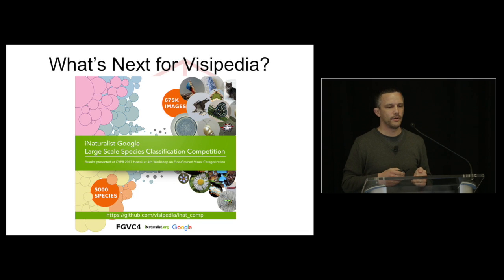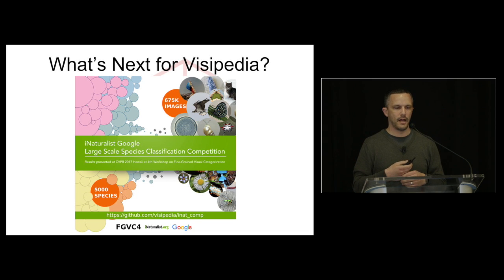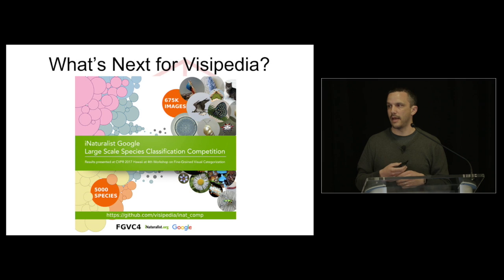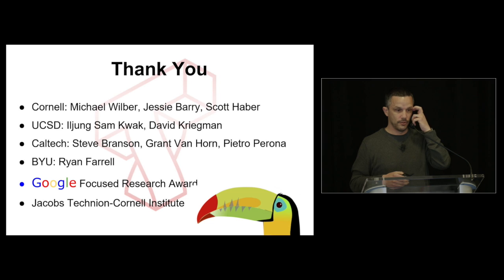In terms of what's next for Visipedia, we've launched a challenge together with the developers of iNaturalist, taking us from birds to over a dozen taxonomic groups — plants and animals. We're running a competition at the CVPR conference in Hawaii in July. It's the iNaturalist challenge sponsored by Google, covering 5,000 species. Soon you'll see something like the Merlin app for birds but for all kinds of plants and animals — just snap a photo and get a classification. With that, I'd like to thank Jared and my students and collaborators on Visipedia.